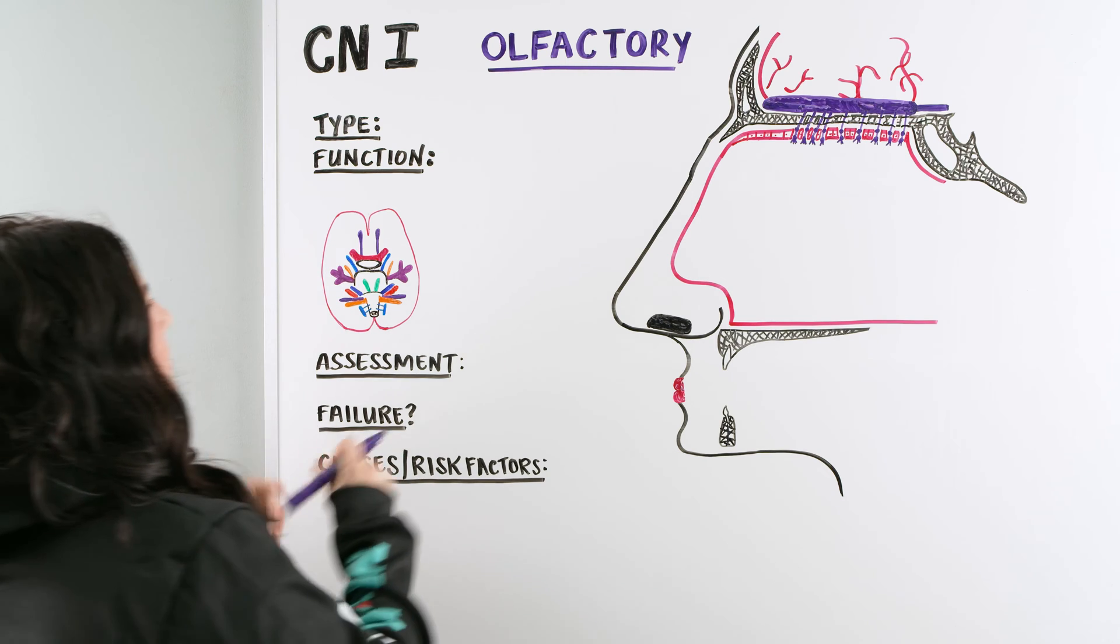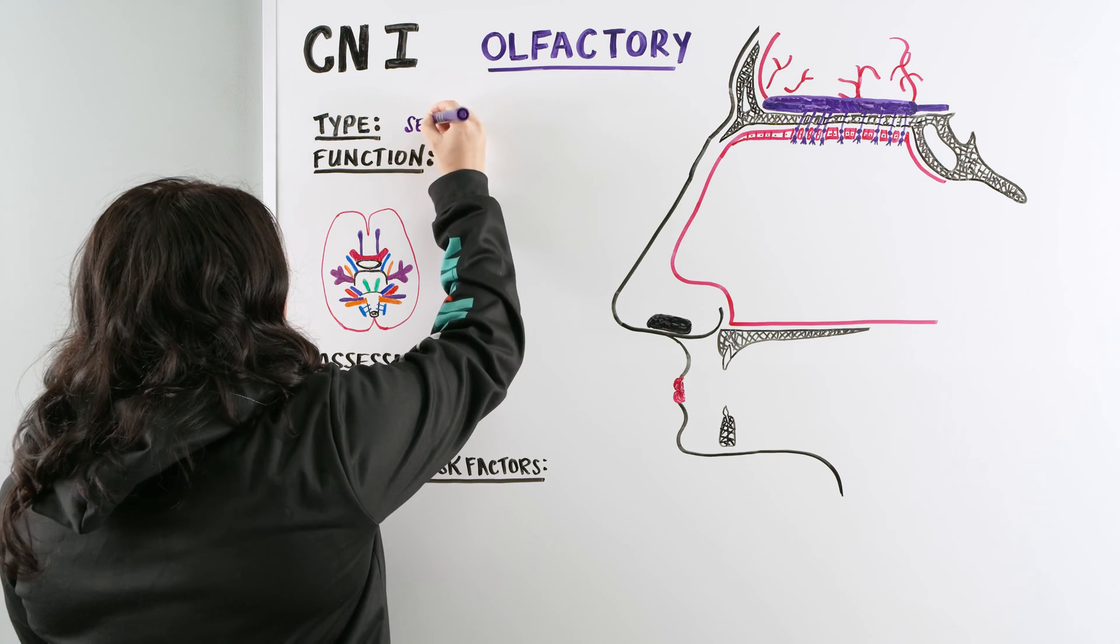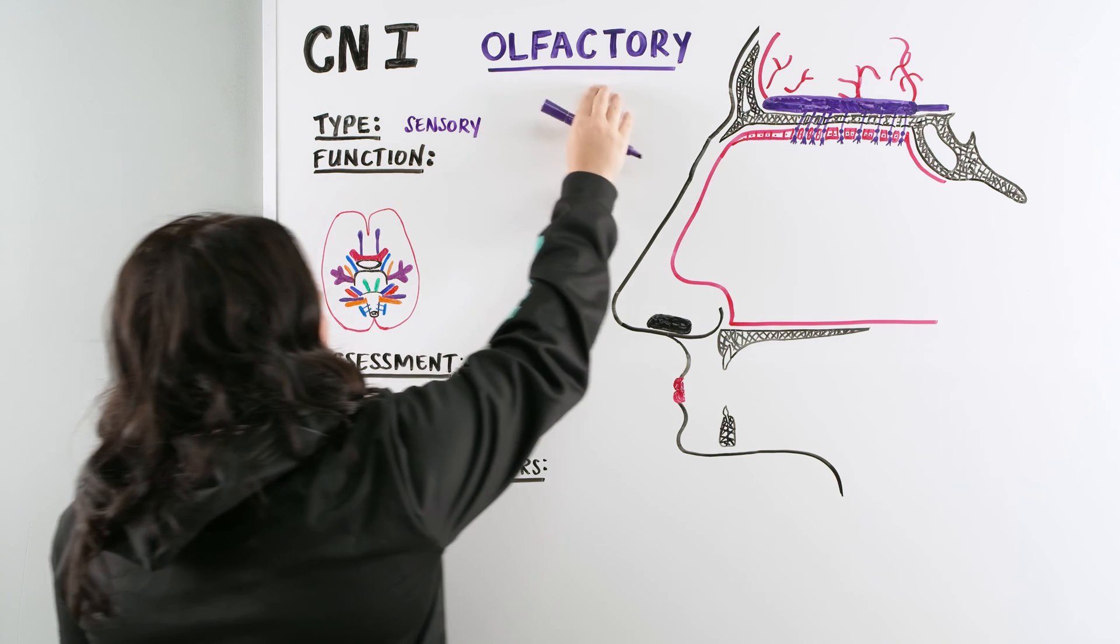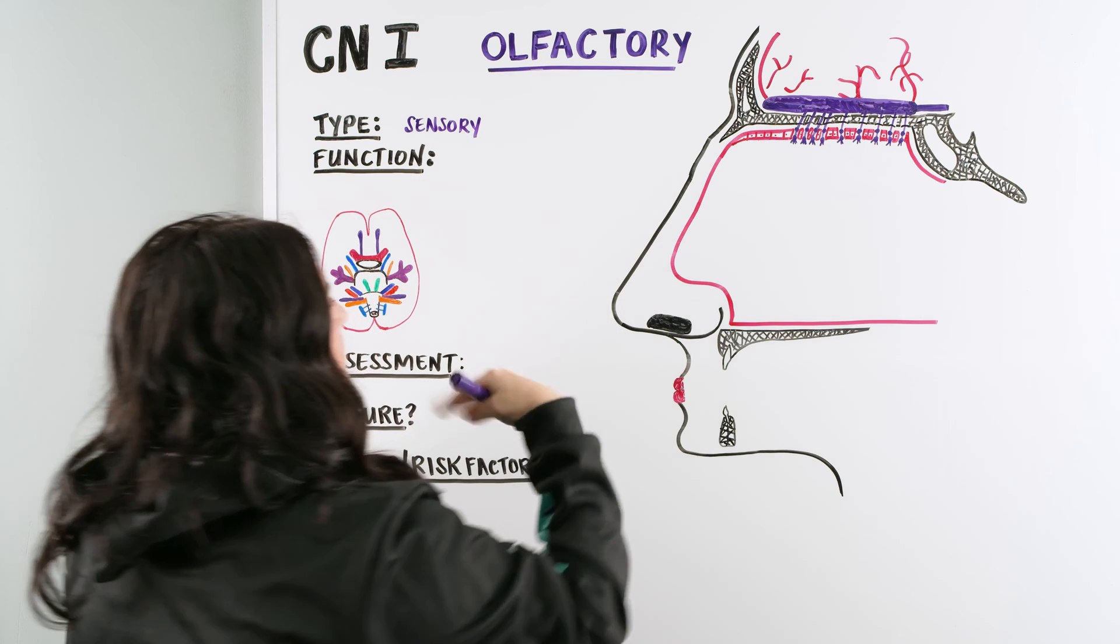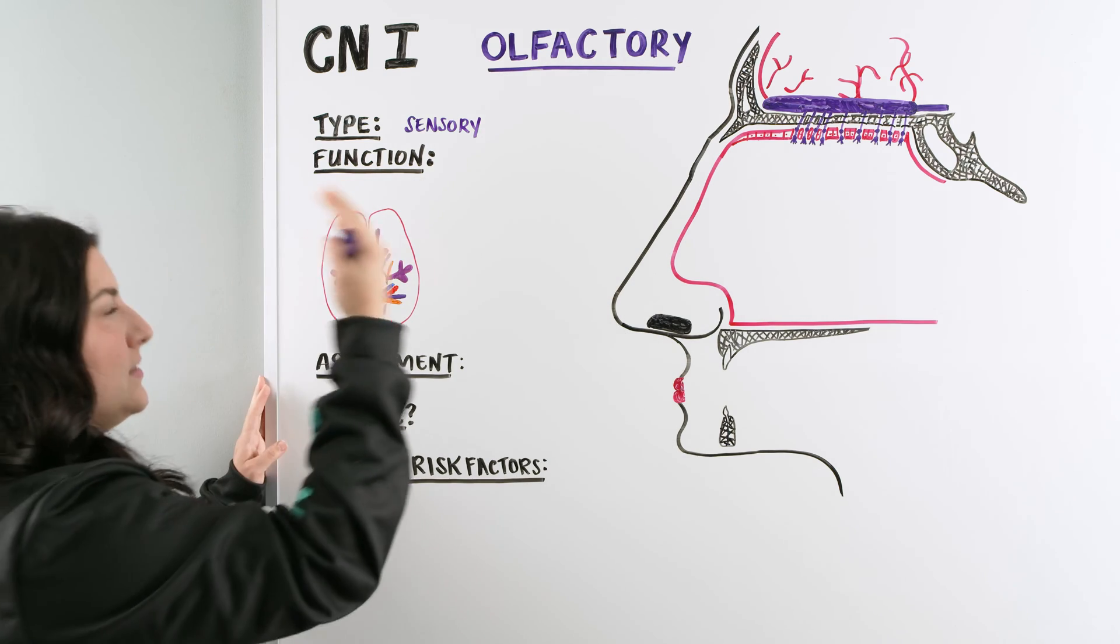So with the Olfactory, we know that it's Cranial Nerve 1 and the type is sensory. Because we know that the type is sensory and we know the word Olfactory or Olfaction, which means smell, the function of Cranial Nerve 1 is the sense of smell.